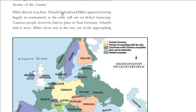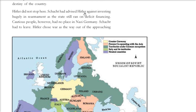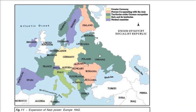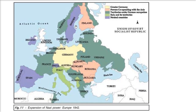A map of Nazi power in Europe in 1942 shows Greater Germany at the center, with territories under German occupation including Poland, Ukraine, France, and parts of Norway. Italy and its territories, and neutral countries like Spain, Sweden, Switzerland, and Ireland, are also shown. Hitler chose war as the way out of the approaching economic crisis — the idea being to expand territory and gain resources.